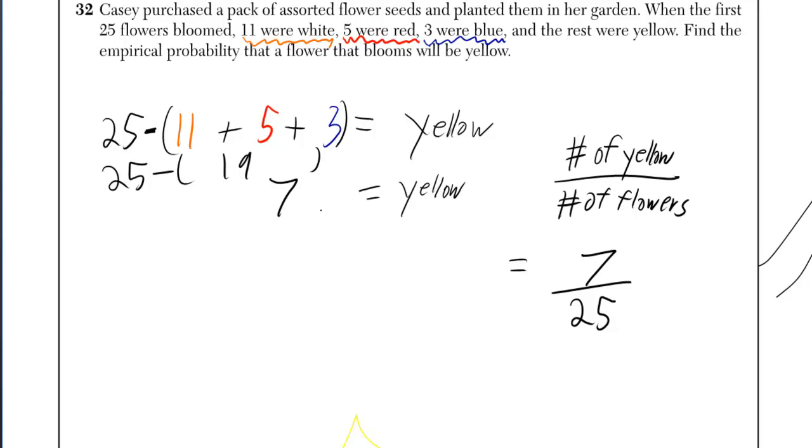So if 7 are yellow, you just have to write 7 out of 25. And to help your intuition a little bit, that's the same thing as 28 out of 100, which is the same thing as 28%.